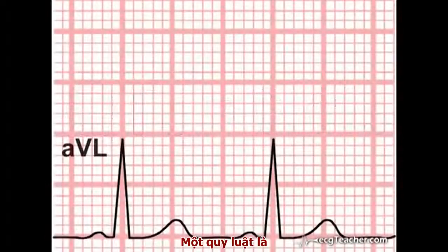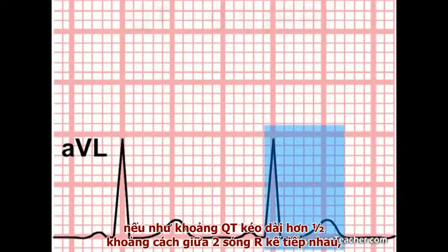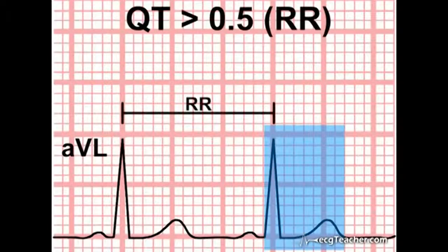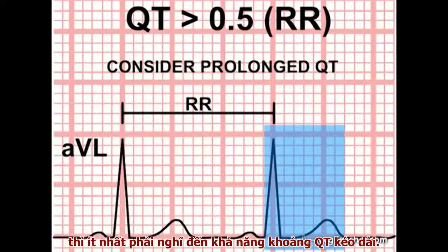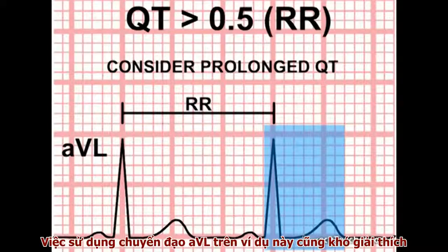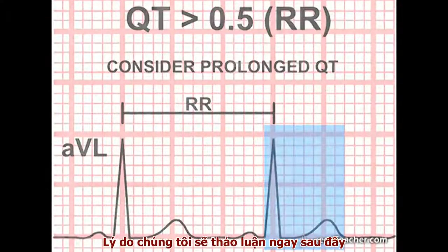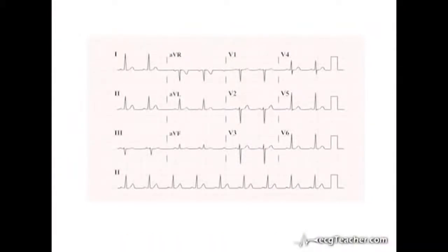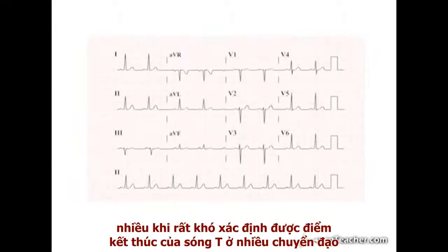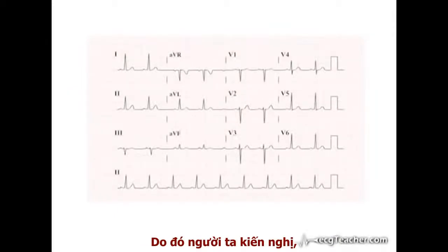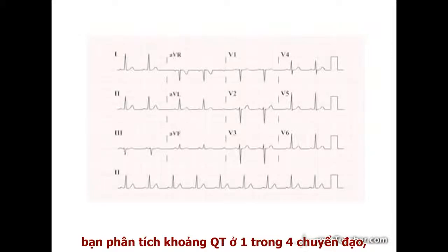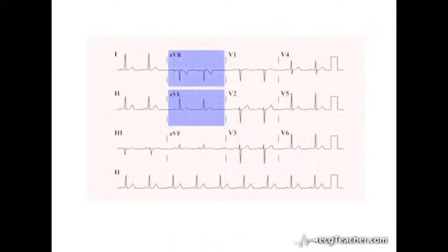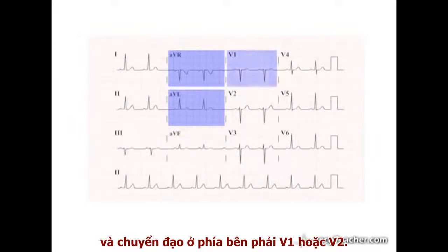As a simple rule of thumb, when you look at an ECG, if the observed QT interval is more than half the RR interval, at least consider the possibility of prolonged QT. The use of AVL in this example is quite deliberate. There is variation in the length of the QT interval between different leads, and it can be difficult to identify the end of the T wave in many leads. It is recommended that you analyse the QT interval in one of four leads: AVL, AVR, or one of the right-sided chest leads, V1 or V2.